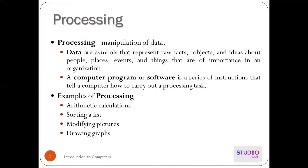Data are symbols that represent raw facts, objects and ideas about people, places, events and things that are important in an organization. Any organization or company has data — it is raw data. The user will give data to the computer, and the computer will manipulate the data, manage it, sort it out, and convert it into a form of useful information.